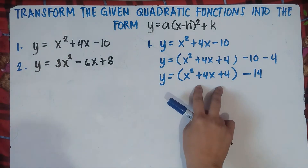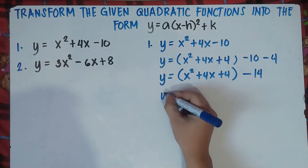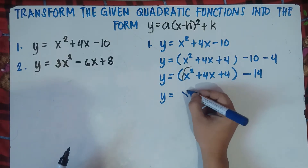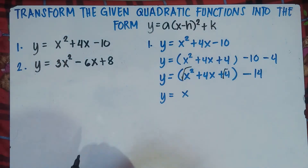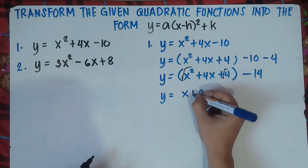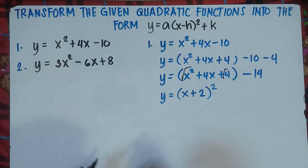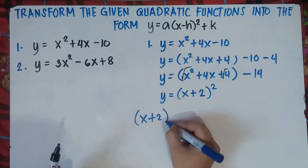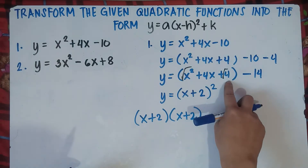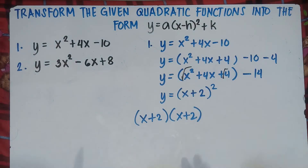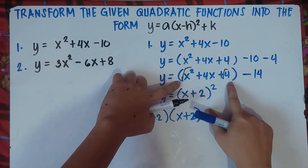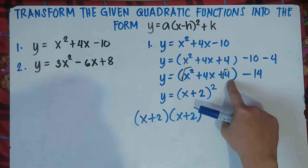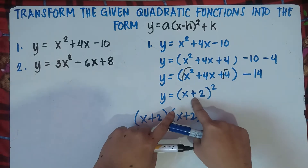This is now a perfect square trinomial. We make it into a square binomial. To do that, get the square root of the first term — square root of x squared is x. Get the square root of the last term — square root of 4 is 2. Copy the sign of the middle term, which is plus. Then put quantity and square: (x + 2) squared.